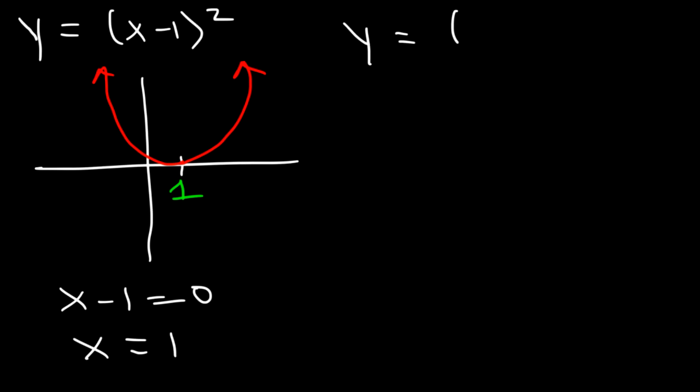Now let's say if we have y equals negative x plus 2 squared. This one is going to shift two units to the left, and with a negative sign in front of it, it's going to open downward.